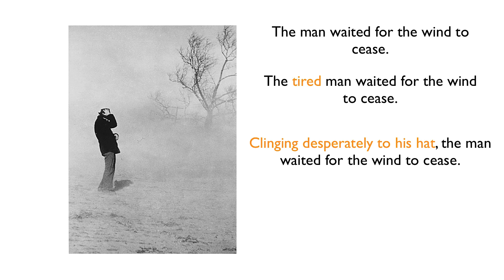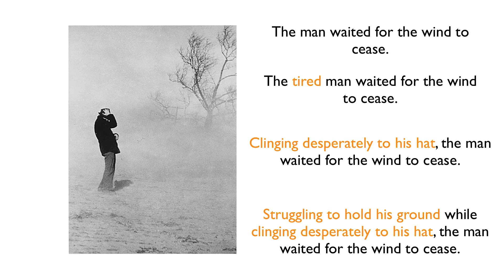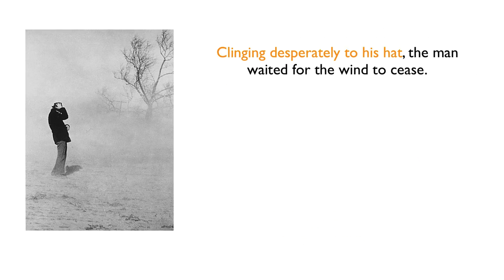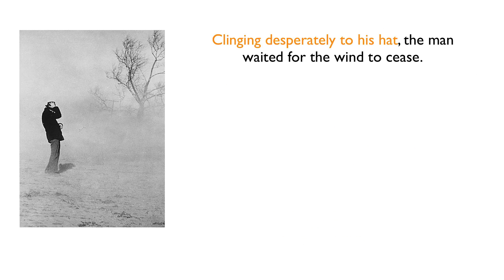If one participial phrase is good, why not throw in two? This is what that might look like. Our participial phrases are 'struggling to hold his ground' and 'clinging desperately to his hat.' You can see how both of these participial phrases add that imagery, that motion or movement. They give us a sort of backdrop against which the main clause action takes place. Now let's focus on just a single participial phrase.